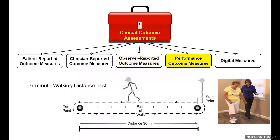Performance outcome measures are typically not for evaluating pain directly, but may be used to measure constructs related to pain. If a person is experiencing a lot of pain, that might impact their performance, whether it's walking distance, grip strength, or similar tasks. These are typically done by the patient under the observation of an assistant or staff member. In the six-minute walking distance test, we see how far a patient can walk within six minutes — the expectation being that people experiencing a lot of pain will cover more limited distances.